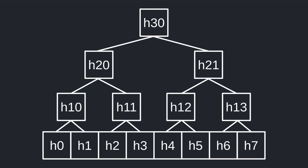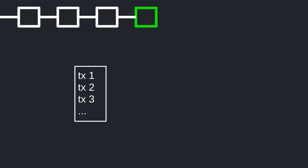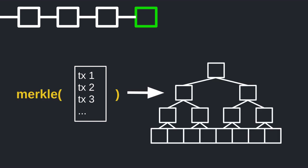So how is a Merkle tree useful? One application is that you can create a cryptographic proof that a transaction was included in a block. Imagine there are a bunch of transactions waiting to be included in a block. To create a cryptographic proof that these pending transactions are included in the next block, we first construct the Merkle tree from these transactions and include the Merkle root hash into the block.